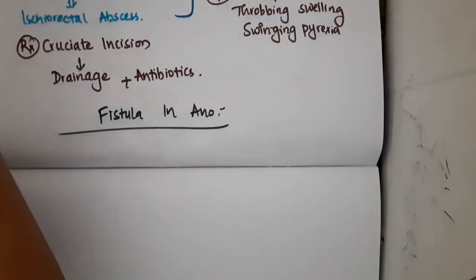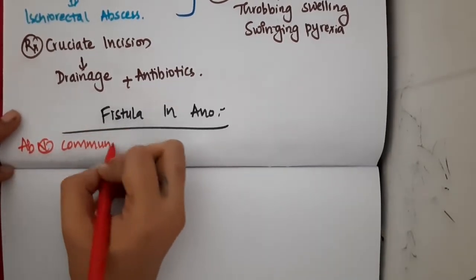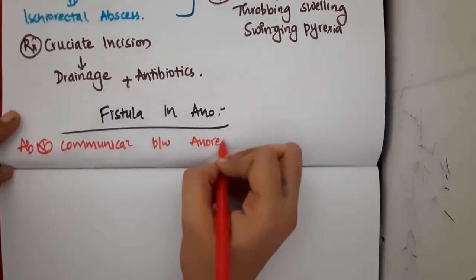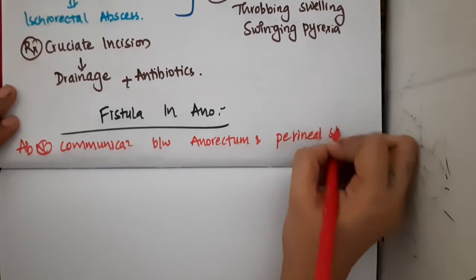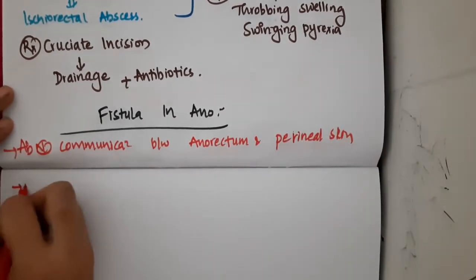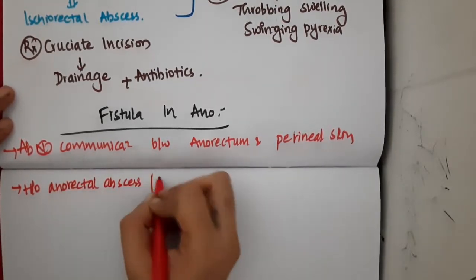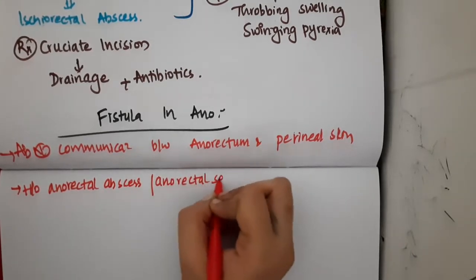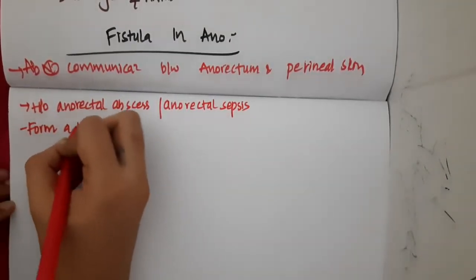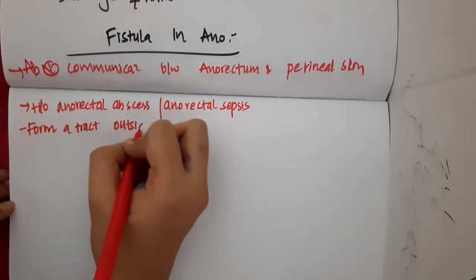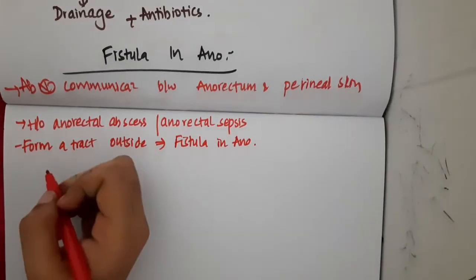What is fistula in Ano? Fistula in Ano is an abnormal communication between the anorectum and the perineal skin — between the rectum or anal canal and the perineal skin. In this patient, there will be a history of anorectal abscess or anorectal sepsis, and this anorectal abscess will form a tract outside, which is called fistula in Ano.